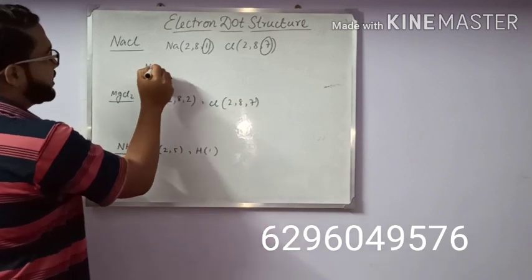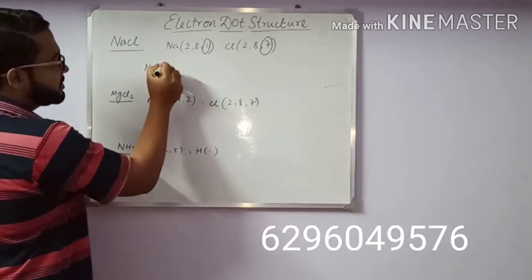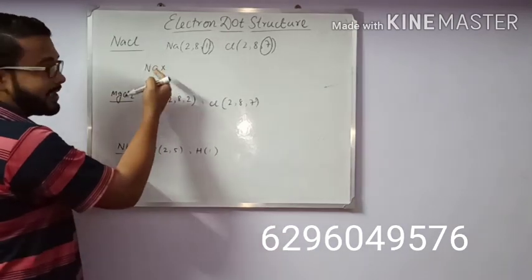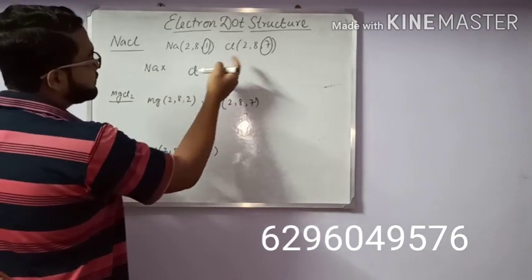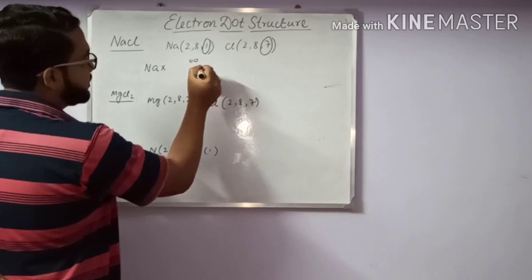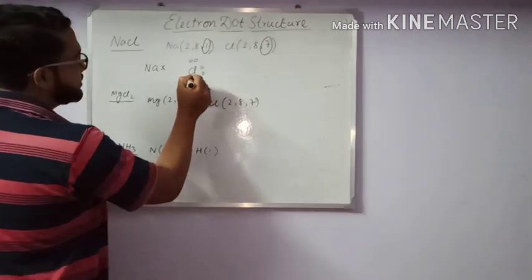So write sodium - its valence electron is denoted by this symbol X, and chlorine's 7 electrons are denoted by these symbols.